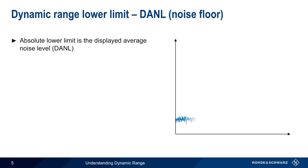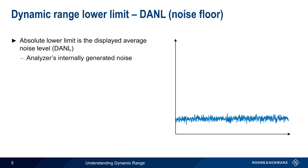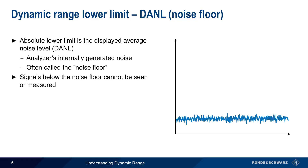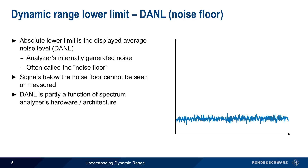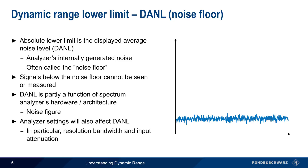The absolute lower limit of dynamic range is the analyzer's displayed average noise level, or DANL. This is the noise generated within the analyzer itself and is often referred to as the analyzer's noise floor. DANL limits dynamic range since signals with amplitudes below this noise floor cannot be seen or measured. An analyzer's DANL is partly a function of the spectrum analyzer's hardware and architecture, often quantified in terms of the analyzer's noise figure — that is, the amount of internal noise that the analyzer adds to the input signal. But DANL is also a function of the analyzer's user-configurable settings. In particular, lowering either resolution bandwidth and/or input attenuation will decrease an analyzer's DANL, and thus usually improve dynamic range. Please see the separate presentations on noise figure and DANL if you'd like to learn more about these two topics.